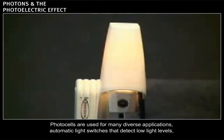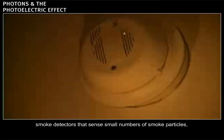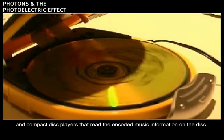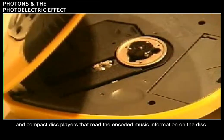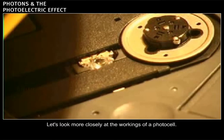Photocells are used for many diverse applications. Automatic light switches that detect low light levels. Photographic light meters that measure light intensity. Smoke detectors that sense small numbers of smoke particles. And compact disc players that read the encoded music information on the disc. Let's look more closely at the workings of a photocell.